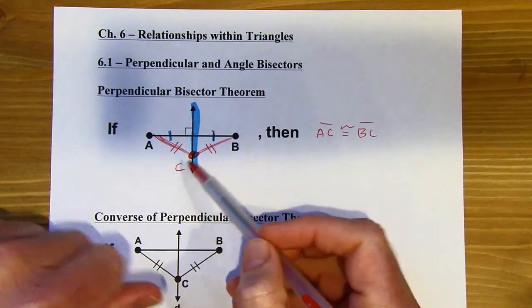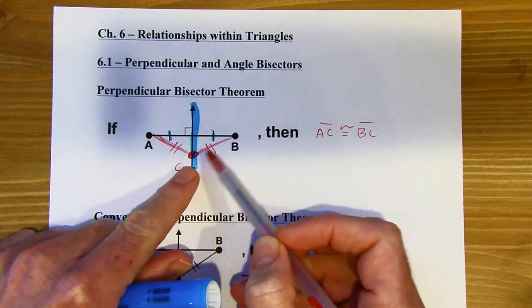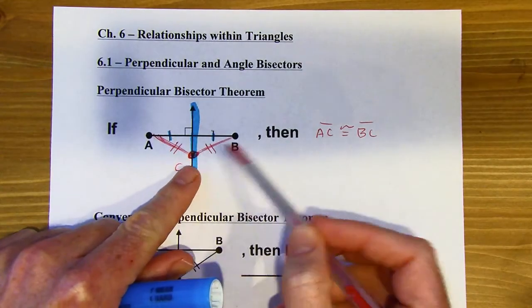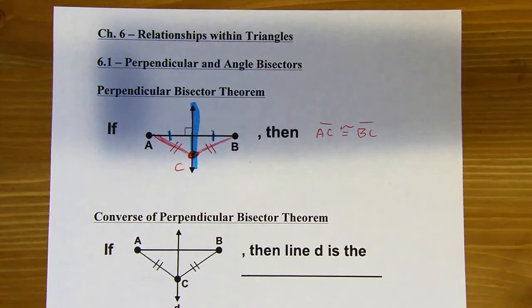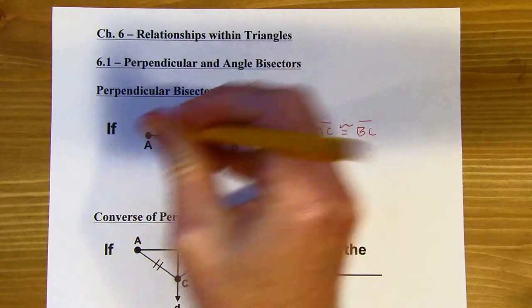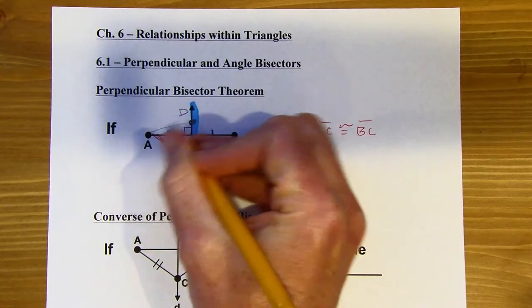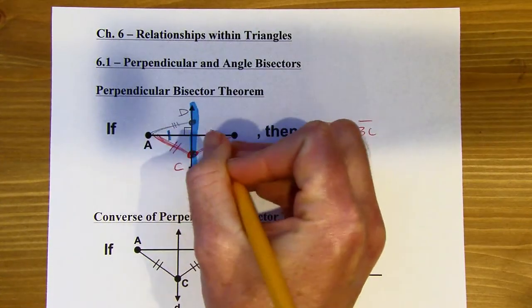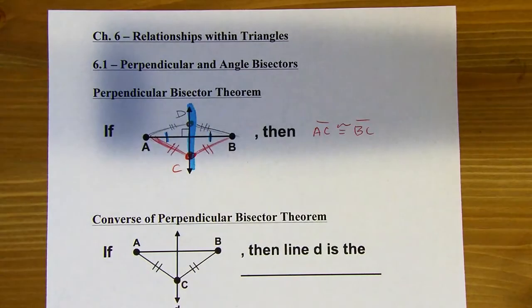If you pick any point on a perpendicular bisector of a segment, then it's going to be equidistant from the endpoints of that segment. To show this again, I could put another point anywhere here — I'll call this point D — and this distance is going to be congruent to this. Any random point on there, that's going to work.